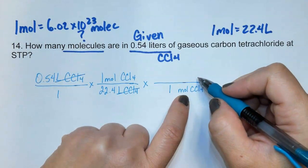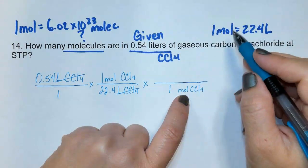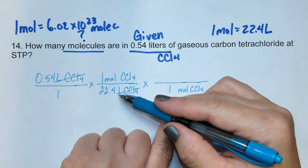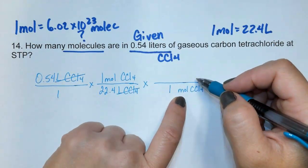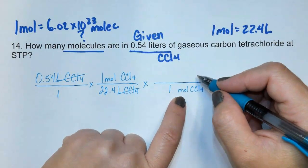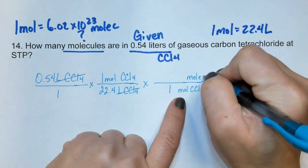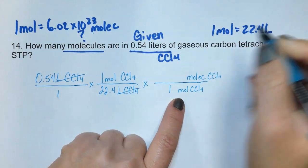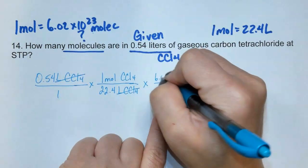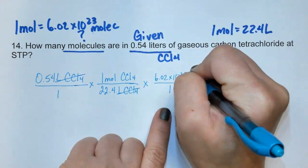We could go to grams by going to the periodic table. We could go to liters using this, which we don't want to do. We just came from there. Or we could go to a representative unit like atoms, molecules, or formula units. In this case, we want molecules. So let's go here. It'll be molecules of CCl4, and it is 6.02 times 10 to the 23rd.